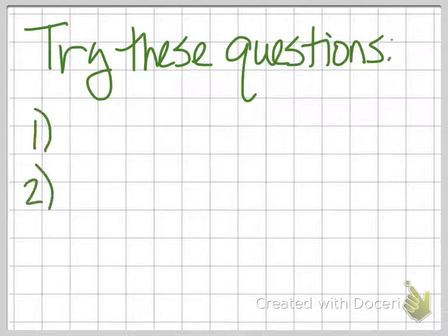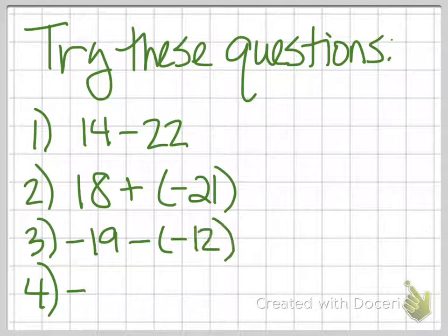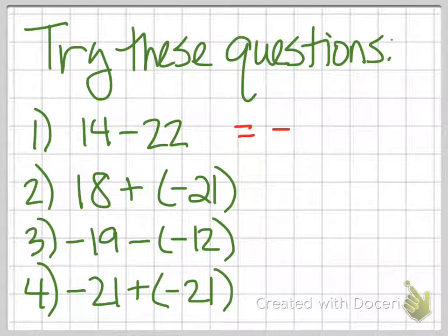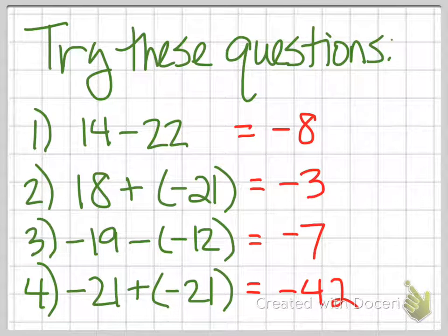Try these questions, then pause the video and check your work. Okay, here are your solutions. 14 minus 22 equals negative 8. 18 plus negative 21 equals negative 3. Negative 19 minus negative 12 equals negative 7. And negative 21 plus negative 21 equals negative 42.